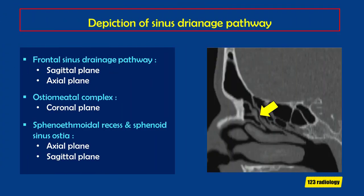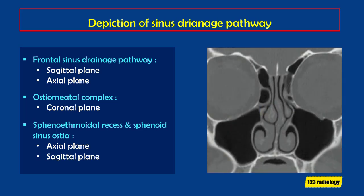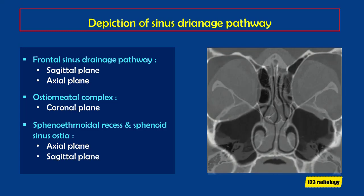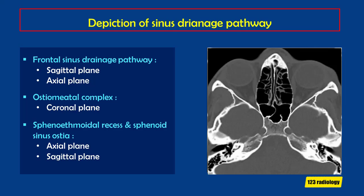The frontal sinus drainage pathway, or the frontal recess, is best depicted on axial and sagittal planes. The ostiomeatal complex is depicted well on the coronal plane. The sphenoethmoidal recess and sphenoid sinus ostia are best seen on axial and sagittal planes.